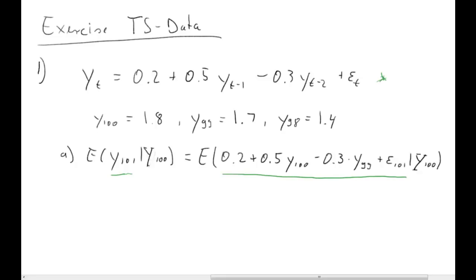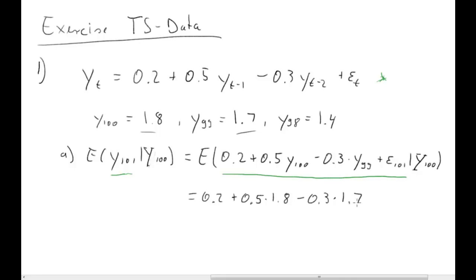Now we evaluate these expectations. The expectation of the constant is just 0.2. Then we have 0.5 times y(100); since y(100) is already part of our information set, which includes all information up to observation 100, we actually have that observation: 0.5 times 1.8. Minus 0.3 times y(99) given information at 100 — we have that, it's 1.7. Plus the expectation of the error term at time 101 given information at 100, which is just 0.